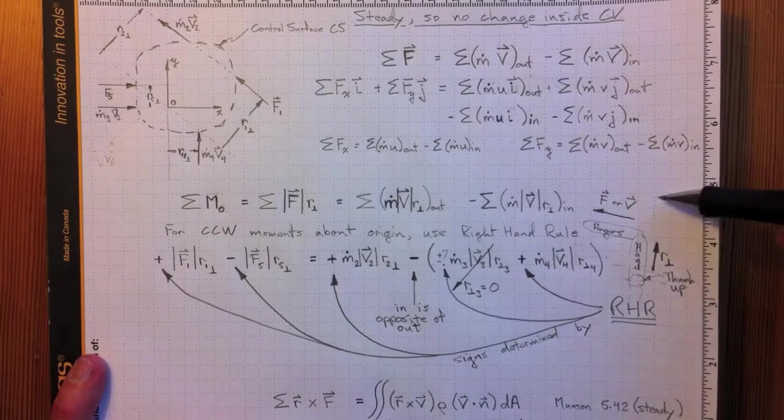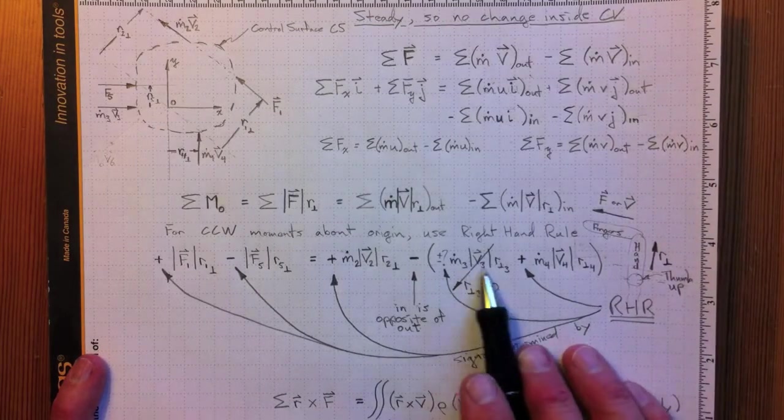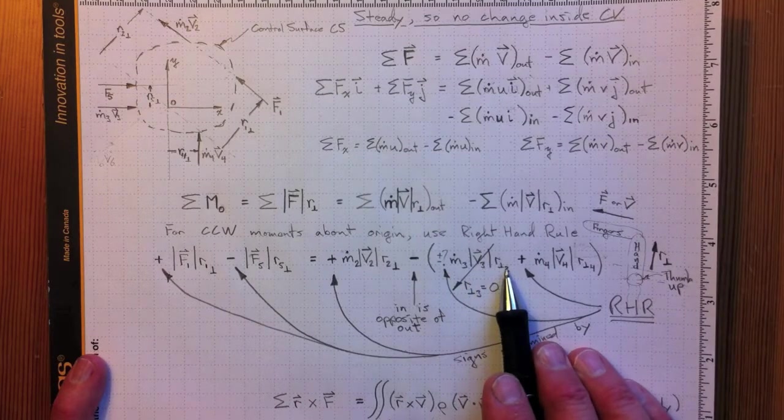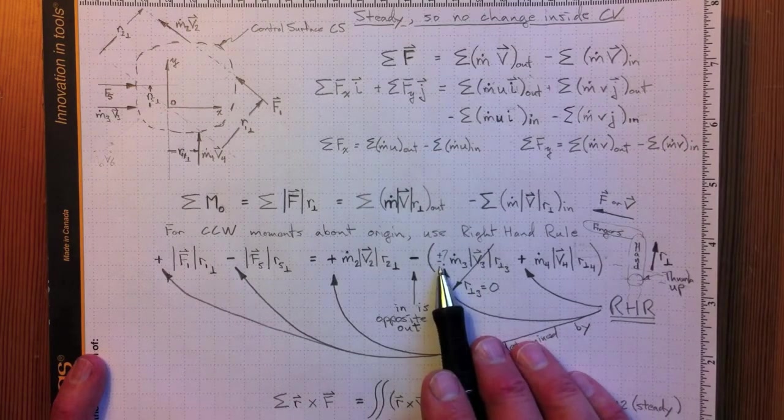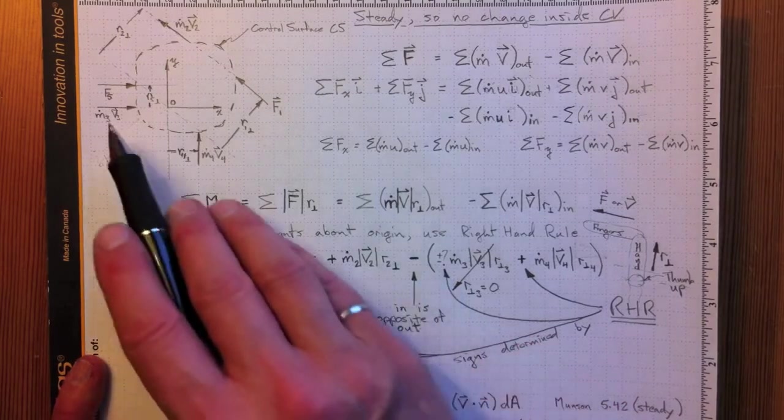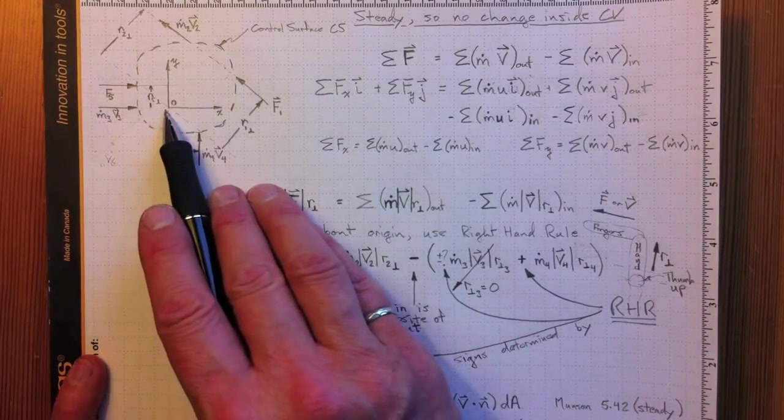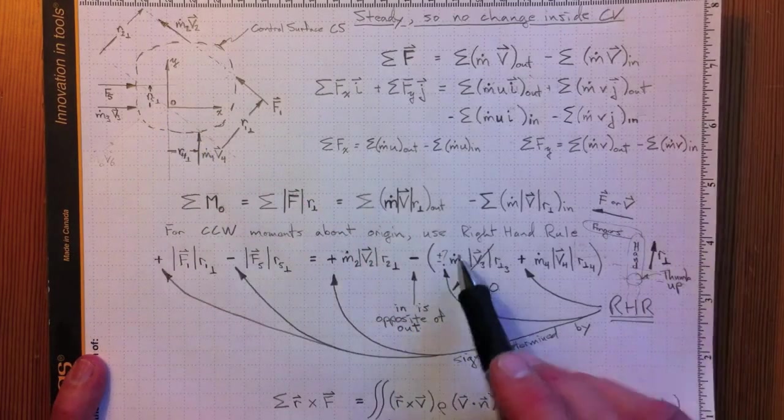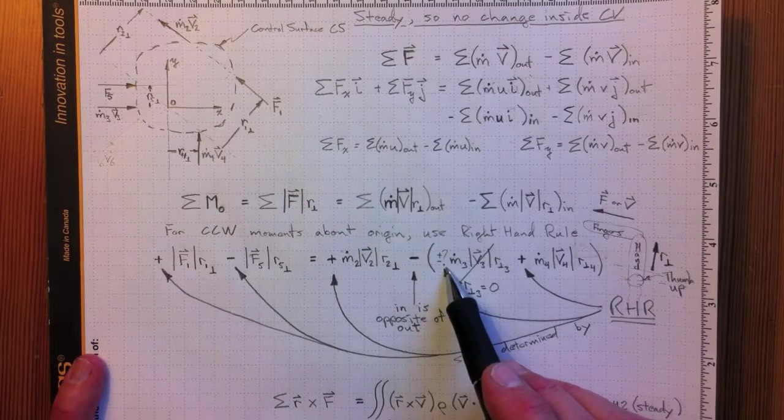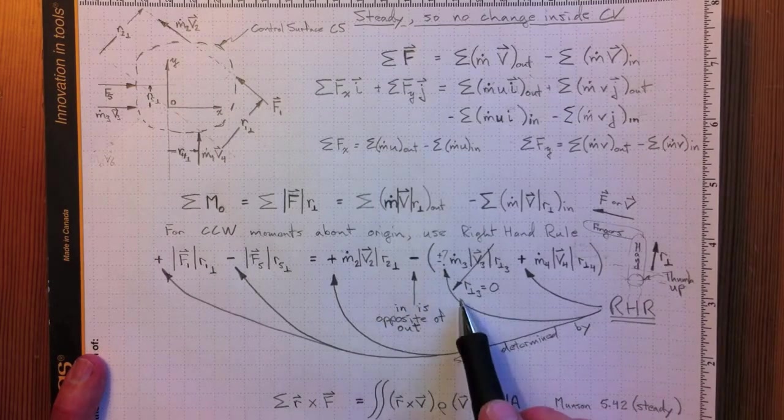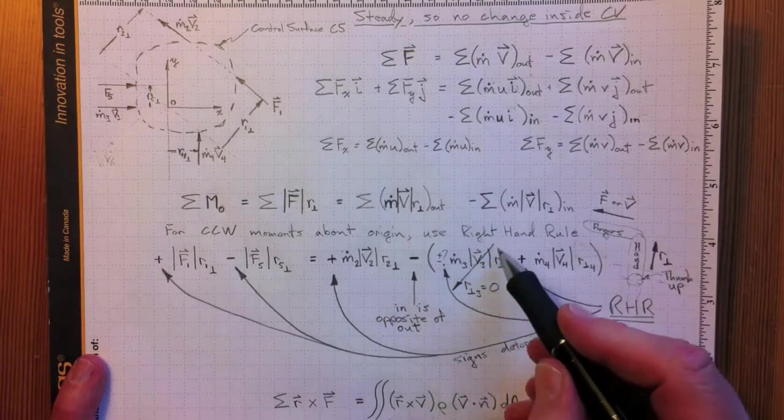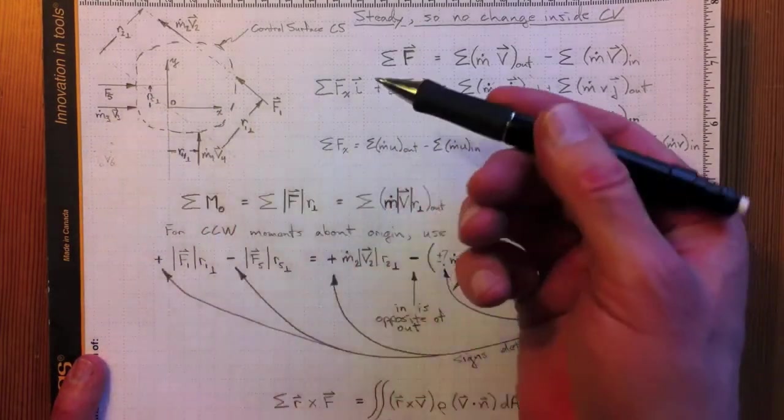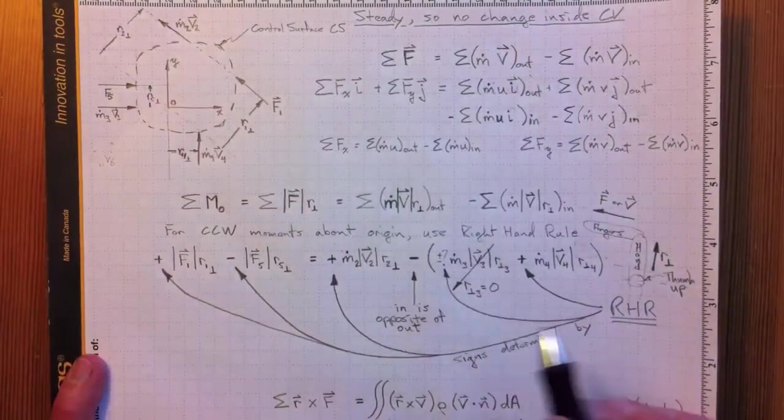So here's our little right hand rule mnemonic. If we look at M3, M dot 3 V3 R perpendicular 3, which direction is that going to be in? If we look at M dot 3, it lines up exactly with the origin, so R perpendicular is zero. It's neither positive nor negative. So R perpendicular is equal to zero. That term makes no contribution to the moments, even though it did make a contribution to the forces applied to the control volume.